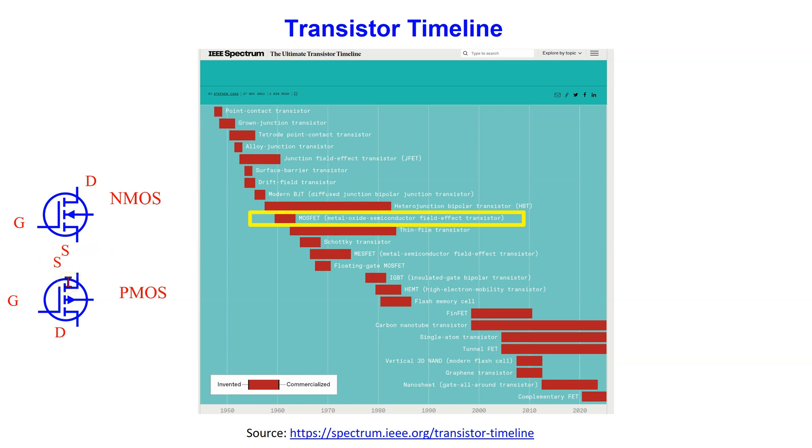The MOSFET has no PN junction structure. Instead, the gate of the MOSFET is insulated from the channel by a silicon dioxide layer. Compared to the BJT which is a current control device, a MOSFET is a voltage control device.